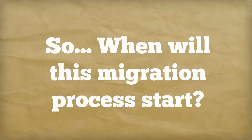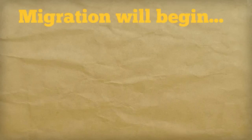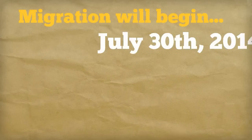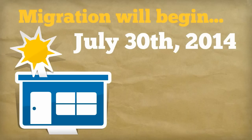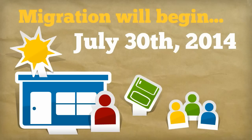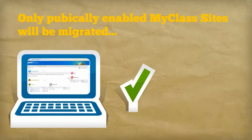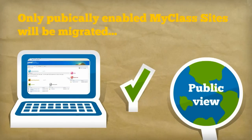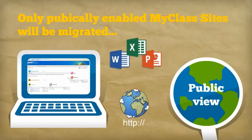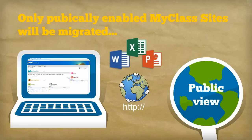So, when will this migration process start? The MyClass migration will begin after the last day of summer school. This will allow teachers to continue to use the current MyClass system to distribute information to summer school students and their parents. Only those MyClass sites that are currently enabled for public view and have existing documents and links will be migrated to the new Office 365 system.